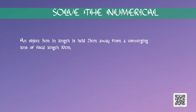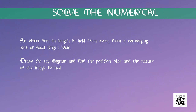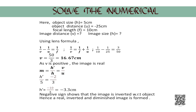Let us start with one. An object 5 cm in length is held 25 cm away from a converging lens of focal length 10 cm. Find the position, size and the nature of the image formed. Here, object size h equals 5 cm. Since the object distance is negative, it will be equal to minus 25 cm. As we know, the focal length of a convex lens is positive, so focal length f equals 10 cm. We are required to find the image distance and the image size. Using the lens formula, 1/v minus 1/u equals 1/f.